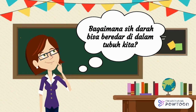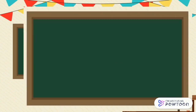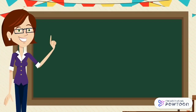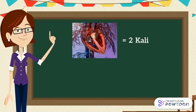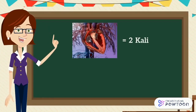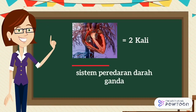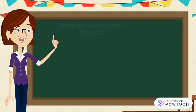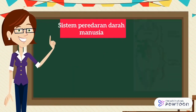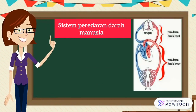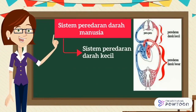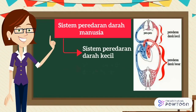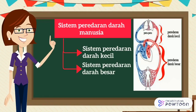Bagaimana sih darah bisa beredar di dalam tubuh kita? Jadi, darah beredar melalui jantung sebanyak dua kali, sehingga disebut dengan sistem peredaran darah ganda. Terdapat dua sistem peredaran darah pada manusia, yaitu sistem peredaran darah kecil dan sistem peredaran darah besar.